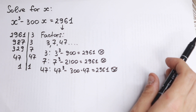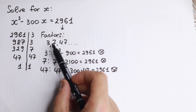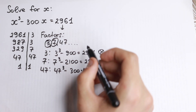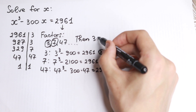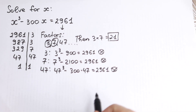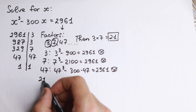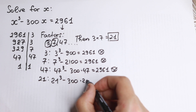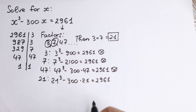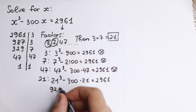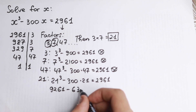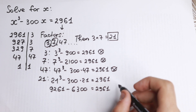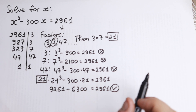I'm going to show you a really good trick: when none of the individual factors works, if 3 and 7 are both factors, then 3 times 7 — which equals 21 — will also be a factor. So we can easily check x = 21. If we plug in 21: 21 cubed minus 300 times 21 equals 9261 minus 6300, which equals 2961. As you can see, this is correct! So 21 is our root.